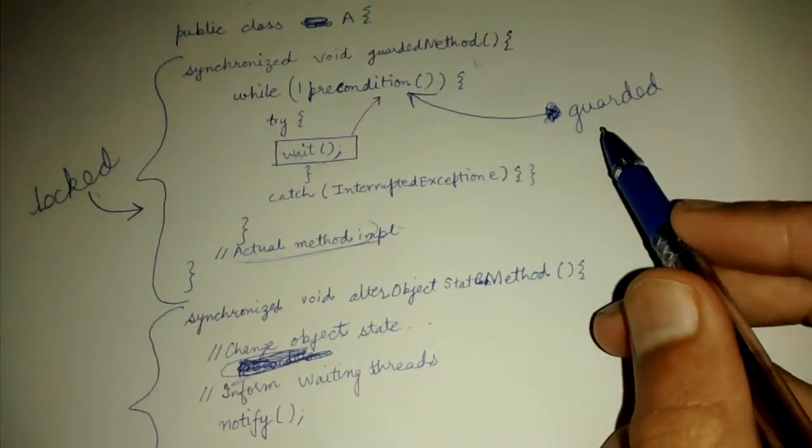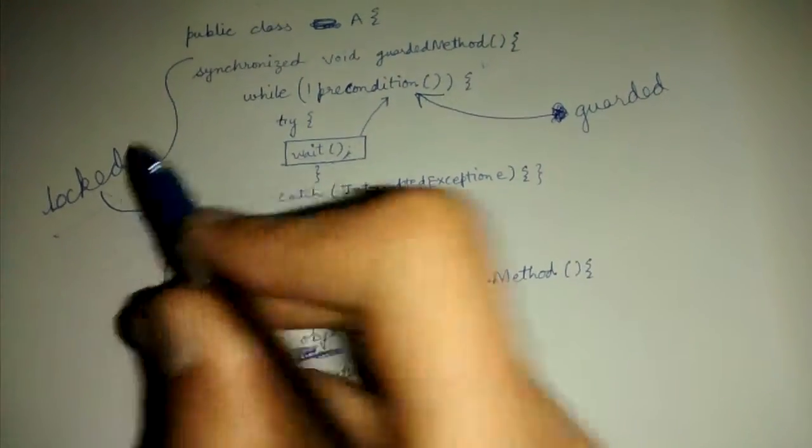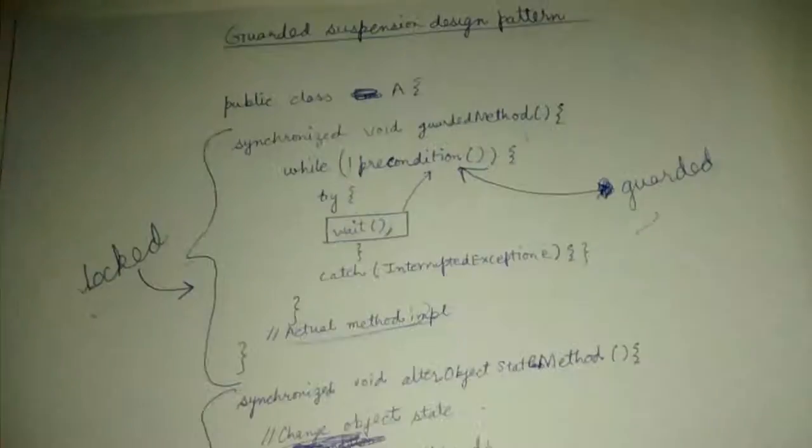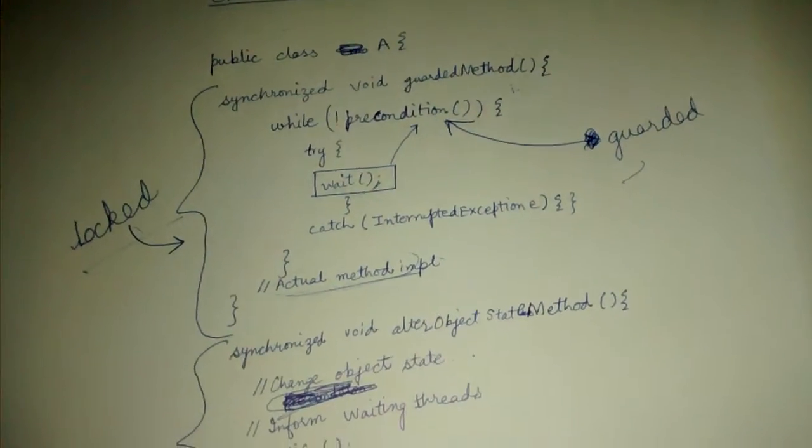So this is protected by a lock and by a guard. So this is the guarded suspension design pattern. Hope you understood. Thank you friends.